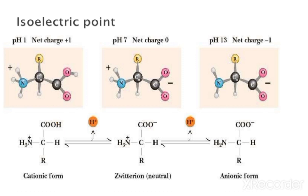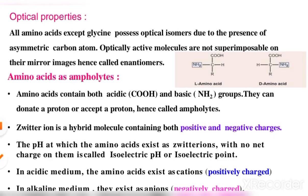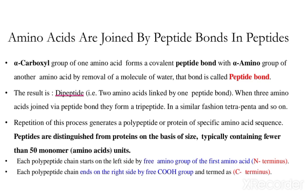Amino acids occur as zwitterions, which are neutral. Now coming to the bonding between amino acids — the bond between amino acids is called a peptide bond. In carbohydrates, we discussed that the bond formed there was a glycosidic bond.